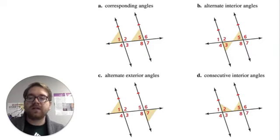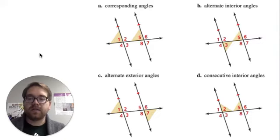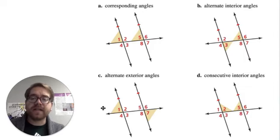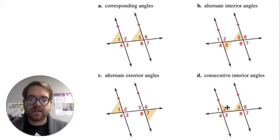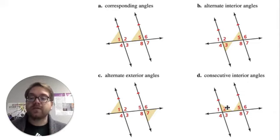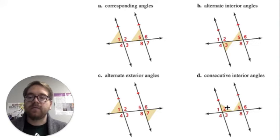We see in each of these images, we have two parallel lines cut by a transversal, and the different angle types are highlighted. We want to make sure we remember that corresponding angles are congruent — angles one and five are congruent. Alternate interior angles are also congruent, three and five. Alternate exterior are congruent, one and seven. And then consecutive interior are supplementary, meaning their measurements add up to 180 degrees. If you don't remember those, go back and review those notes or watch the videos.